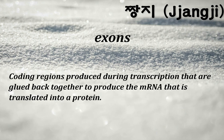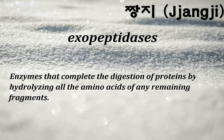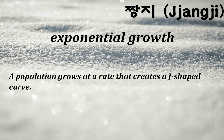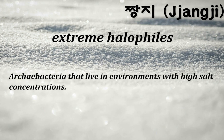Exons: coding regions produced during transcription that are glued back together to produce the mRNA that is translated into a protein. Exopeptidases: enzymes that complete the digestion of proteins by hydrolyzing all amino acids of any remaining fragments. Exponential growth: a population grows at a rate that creates a J-shaped curve. Extreme halophils: archaebacteria that live in environments with high salt concentrations.